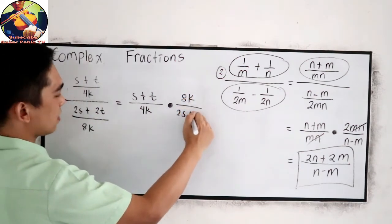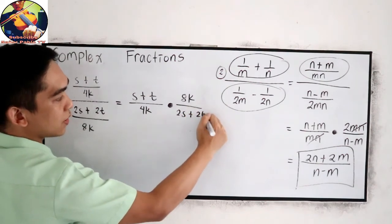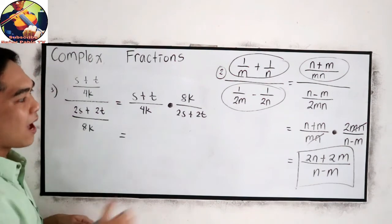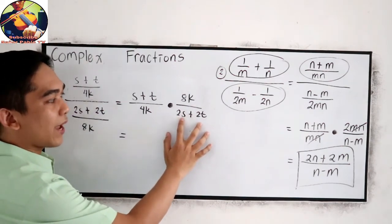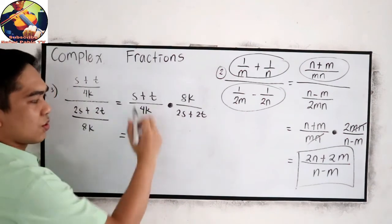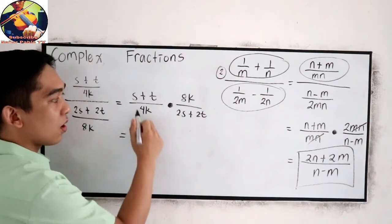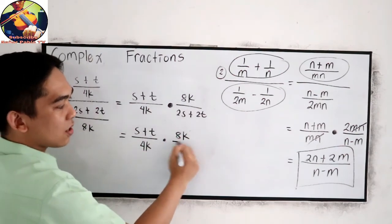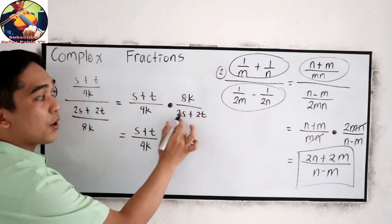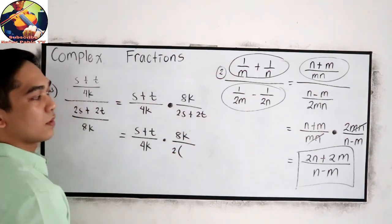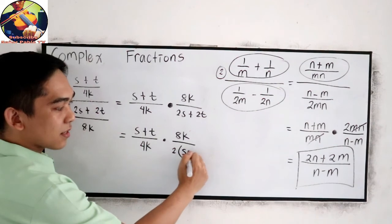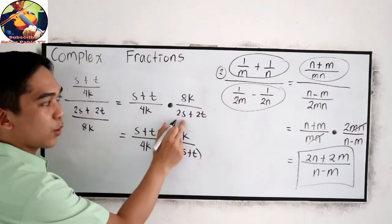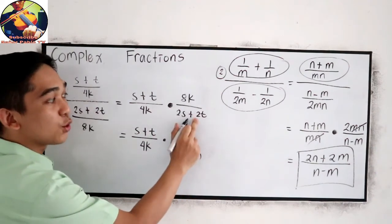to multiplication. Get the reciprocal of the denominator, so 8K all over 2S plus 2T. Now let's factor 2S plus 2T. So we just copy S plus T all over 4K times 8K all over our common factor is 2.